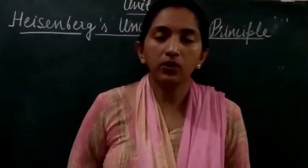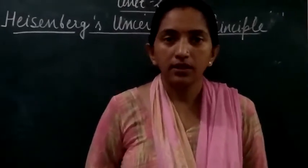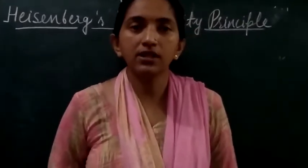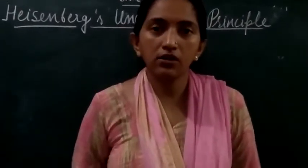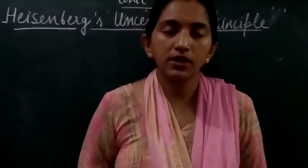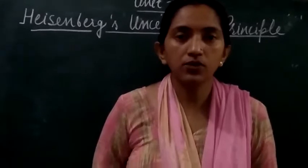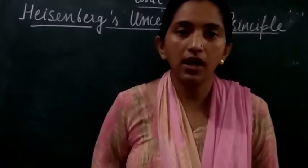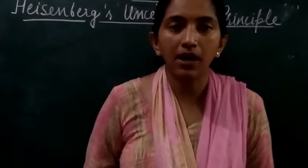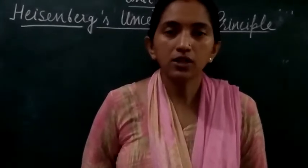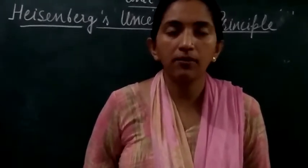We are going to discuss the Heisenberg Uncertainty Principle. Before we start, it is everyone's experience that if an object is moving, its position and velocity can be determined — we can trace its path or trajectory. Now this is possible only for objects which are bigger or macroscopic.